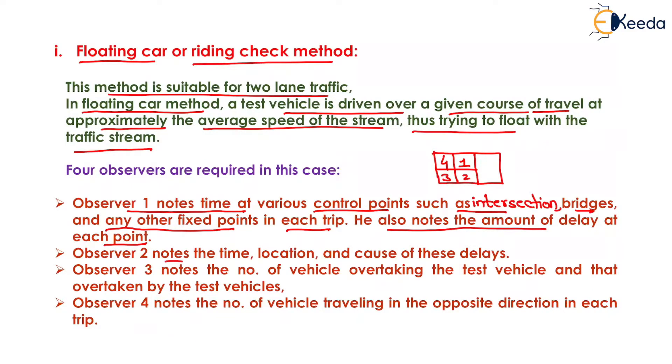The second observer notes the time, location and causes of these delays. The third observer notes the number of vehicle overtaking the test vehicle and that overtaken by the test vehicle. And Observer 4 notes the number of vehicle traveling in the opposite direction in each trip.